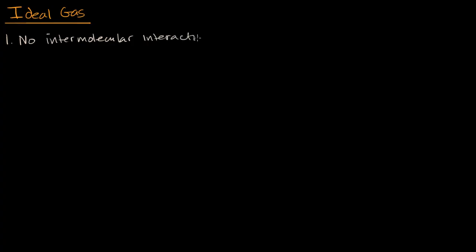What do we mean by intermolecular interactions? An example is something like a hydrogen bond. Say you have two neighboring water molecules — an oxygen with two hydrogens each. The oxygen end of a water molecule, in gas form — water vapor — has a partially negative charge, and the hydrogen end has a partially positive charge. These are attracted to each other: these are hydrogen bonds, and that is an intermolecular interaction.